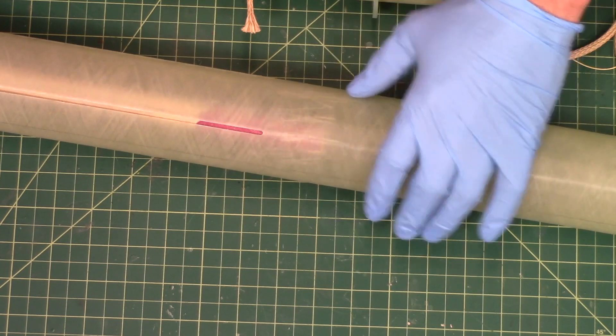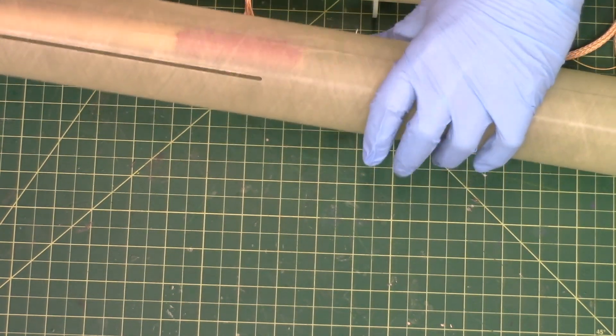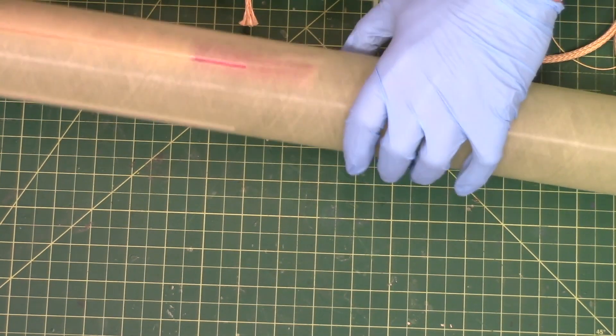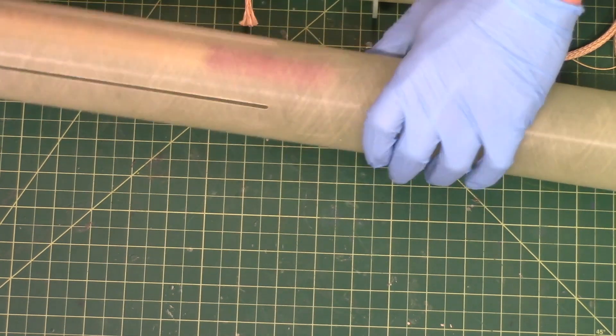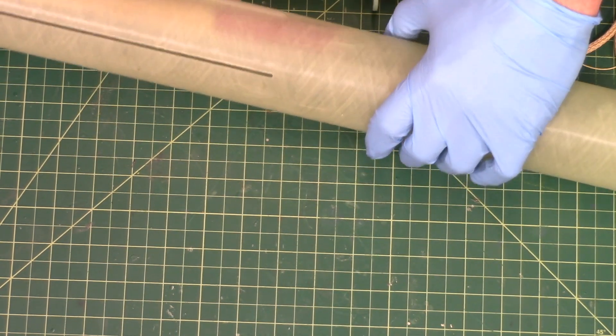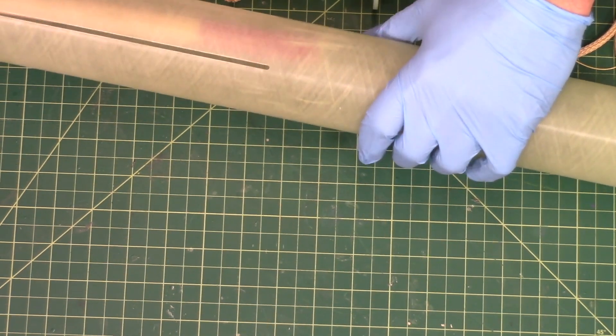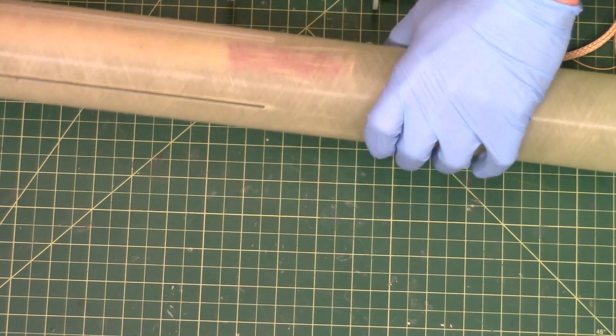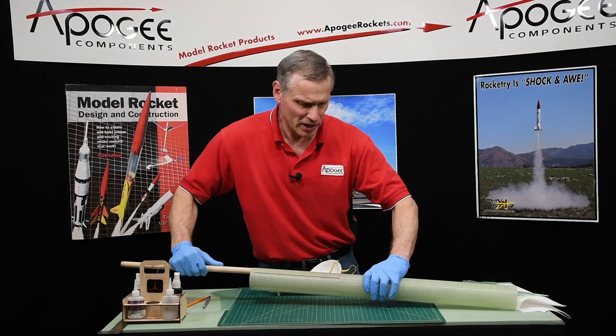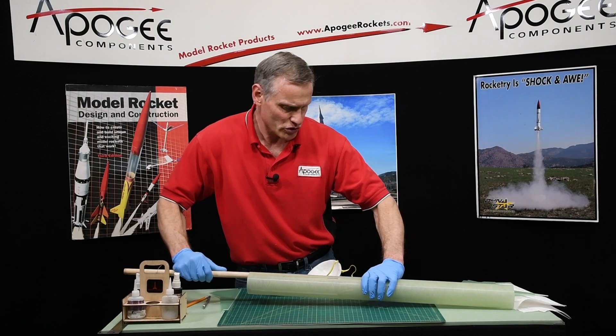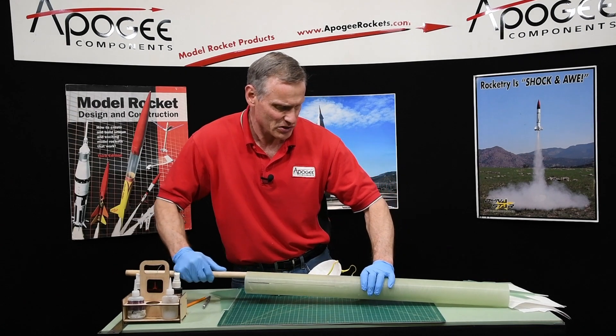And you can see it's kind of stuck in there. That's the nice thing about fiberglass tubes. It's a little bit translucent so you can actually see what's going on on the inside.